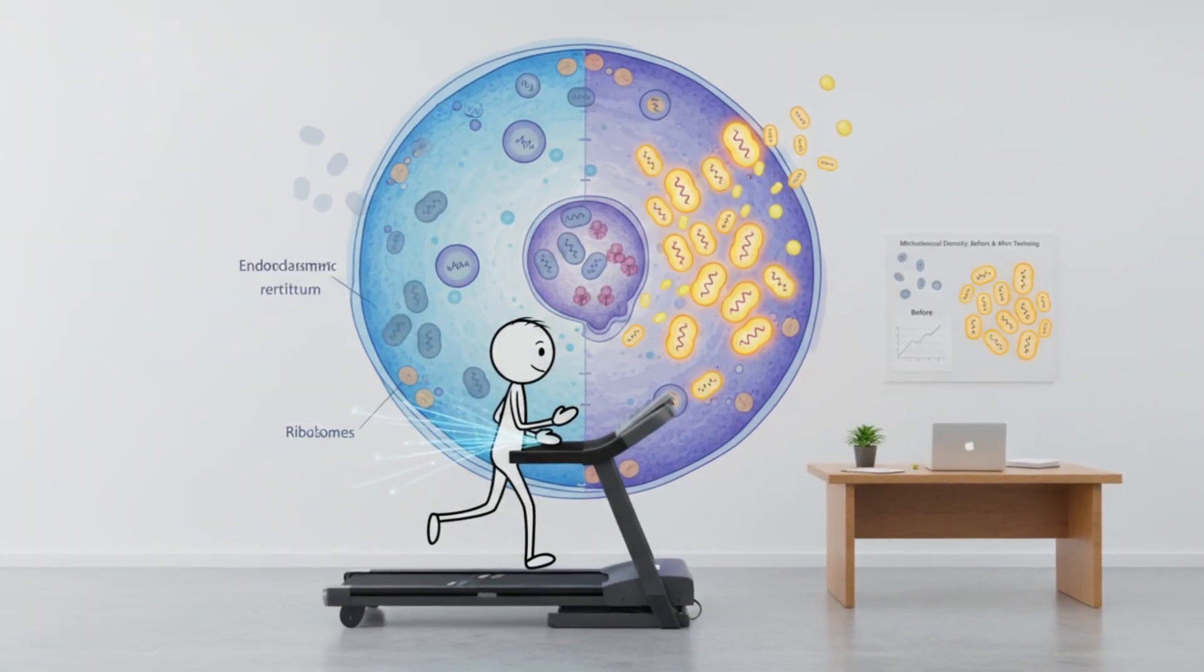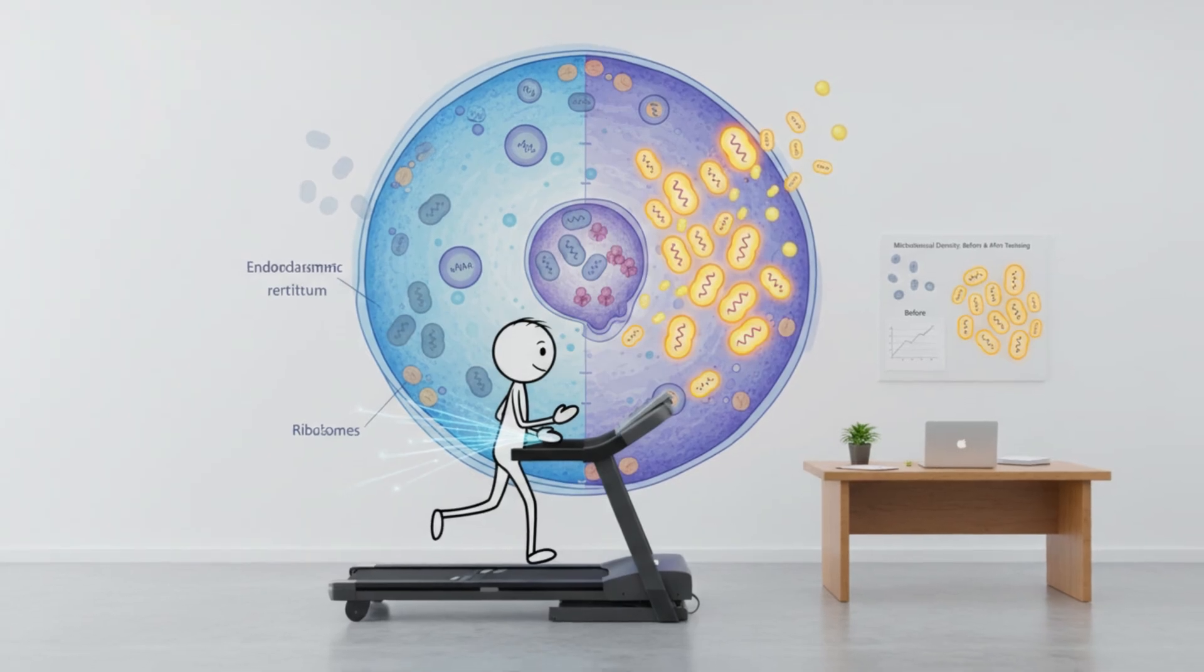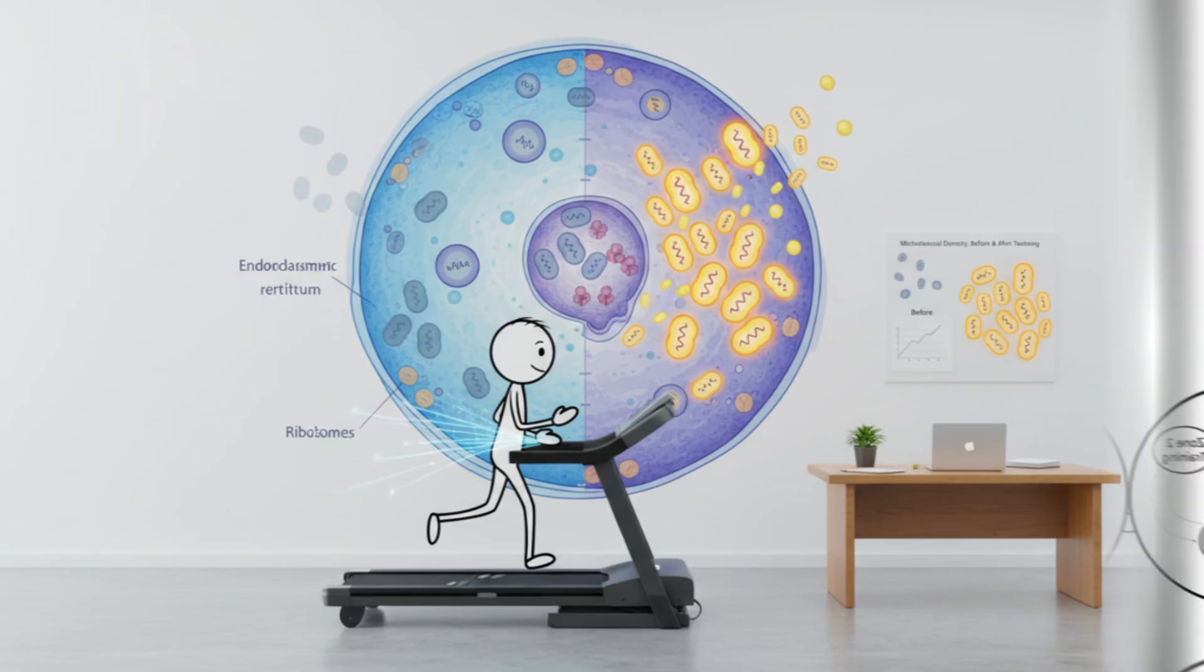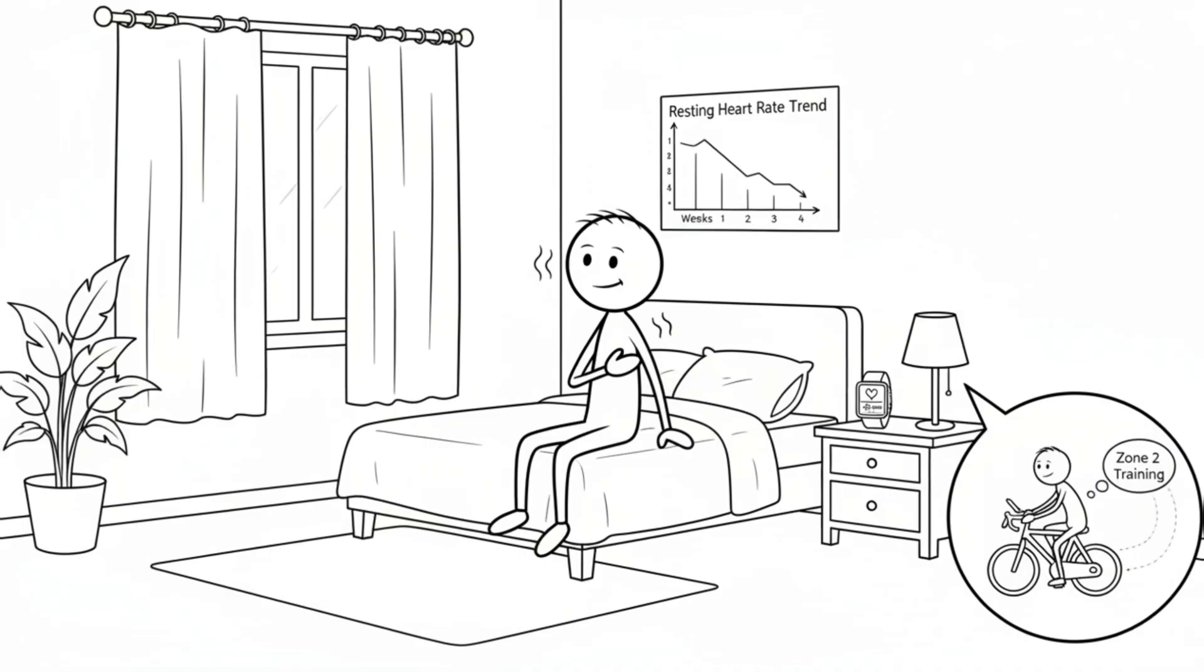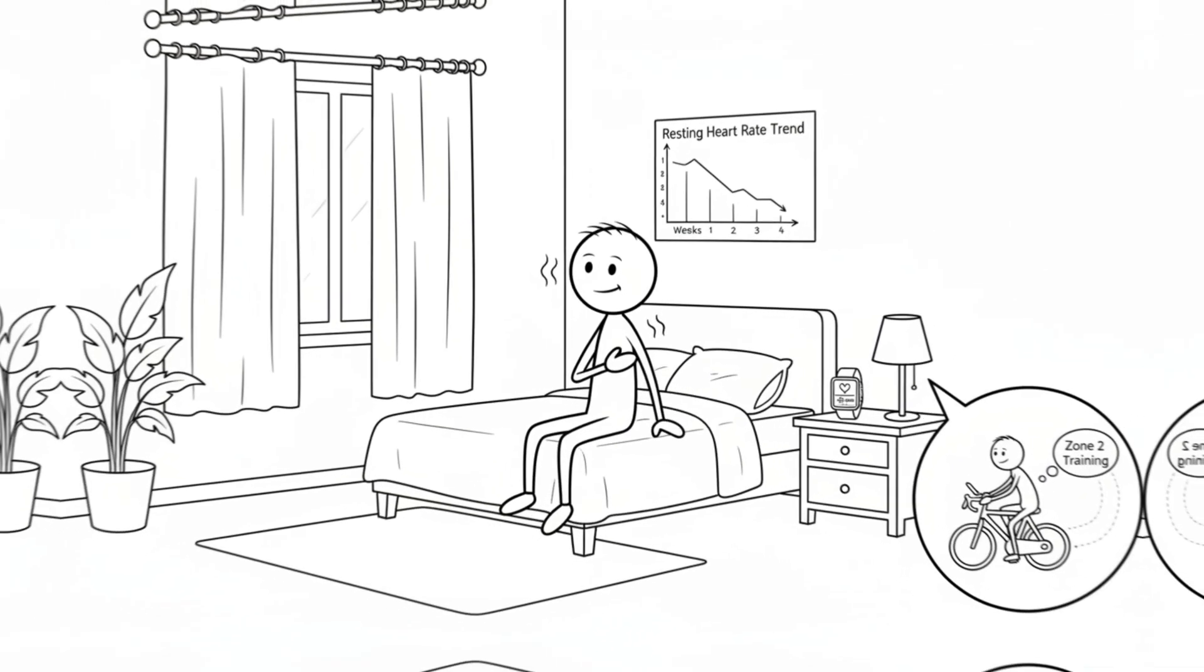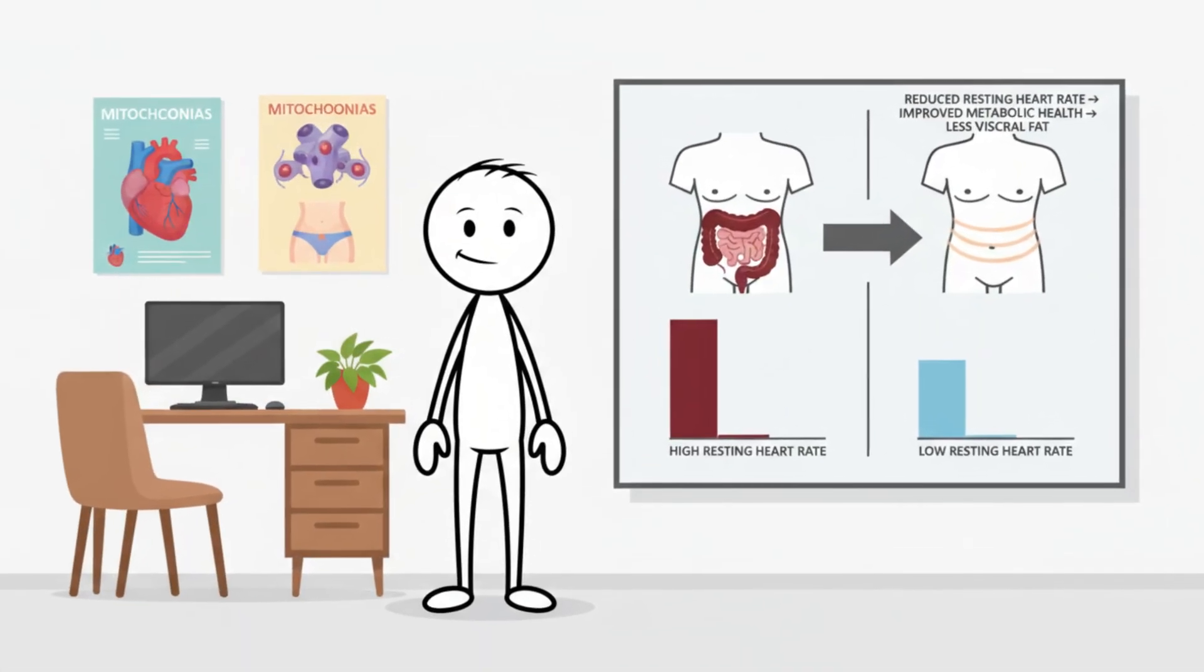You can also track resting heart rate. As your cardiovascular system adapts to regular zone 2 work, resting heart rate gradually decreases. This shift is associated with improved metabolic health and often accompanies reductions in visceral fat.